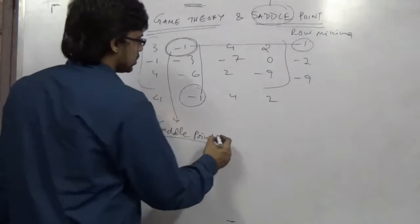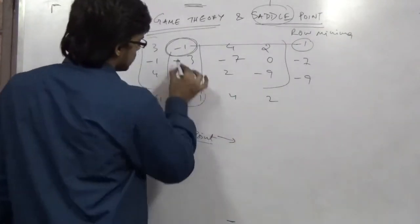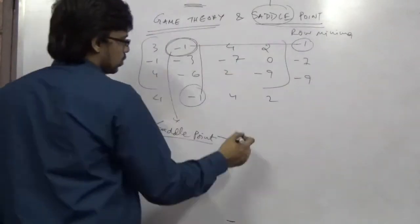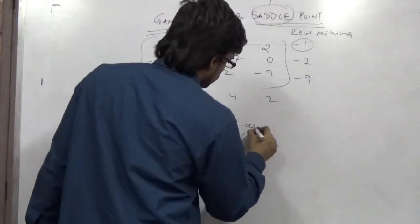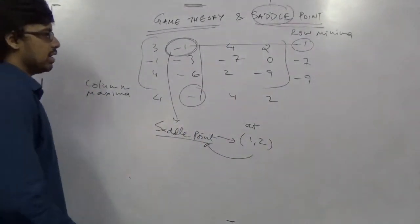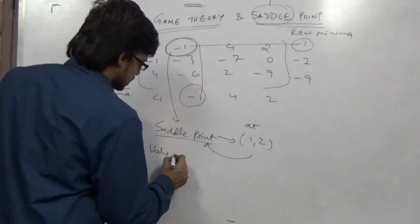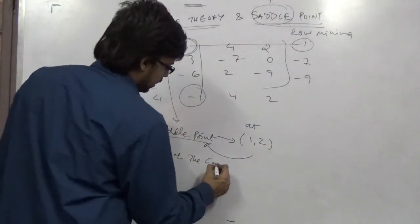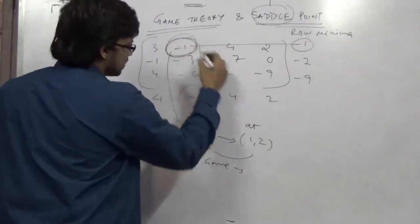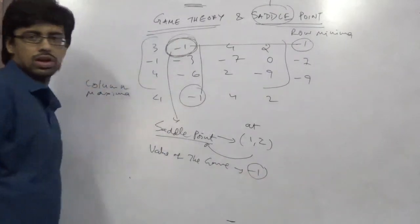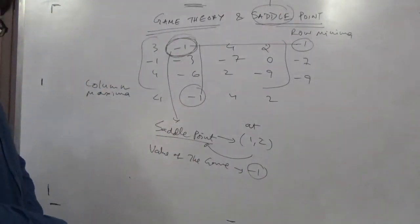So saddle point, what is the position? That is row comma column. This is row 1, column 2. So at 1, 2 you have the saddle point. And value of the game is. There don't have to be anything. This itself becomes the value of the game. That is minus 1. So this is all about the saddle point equation.